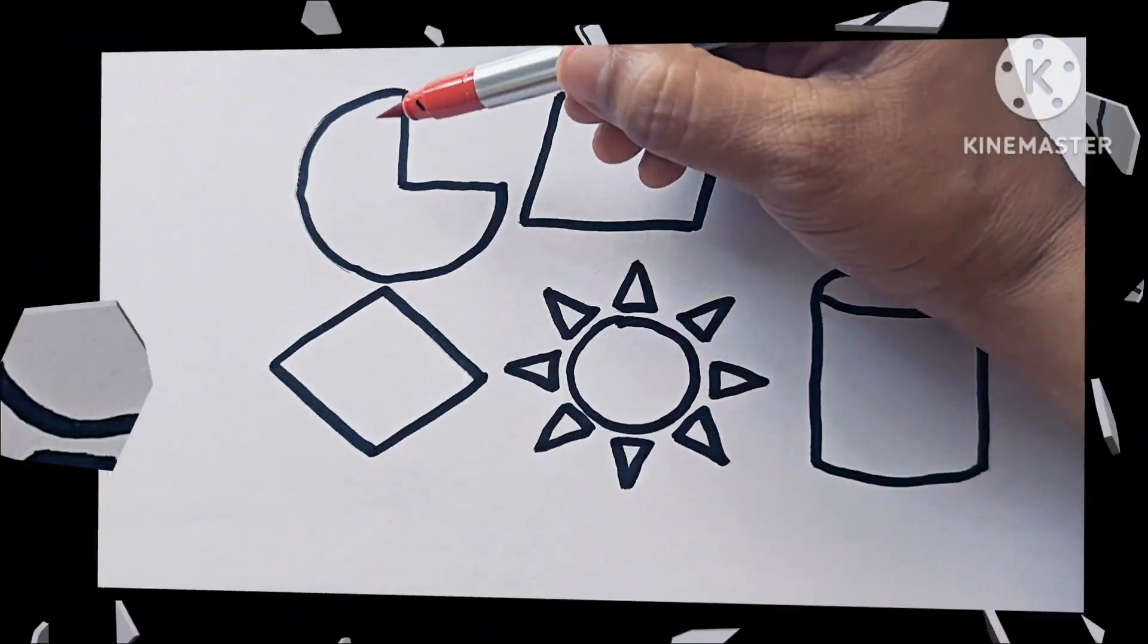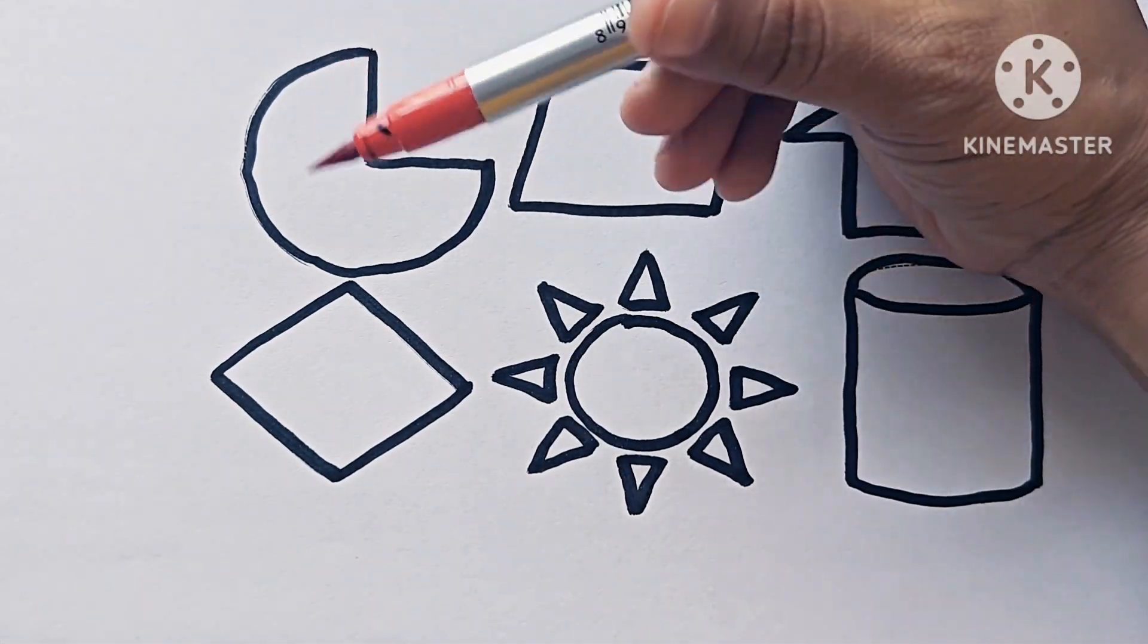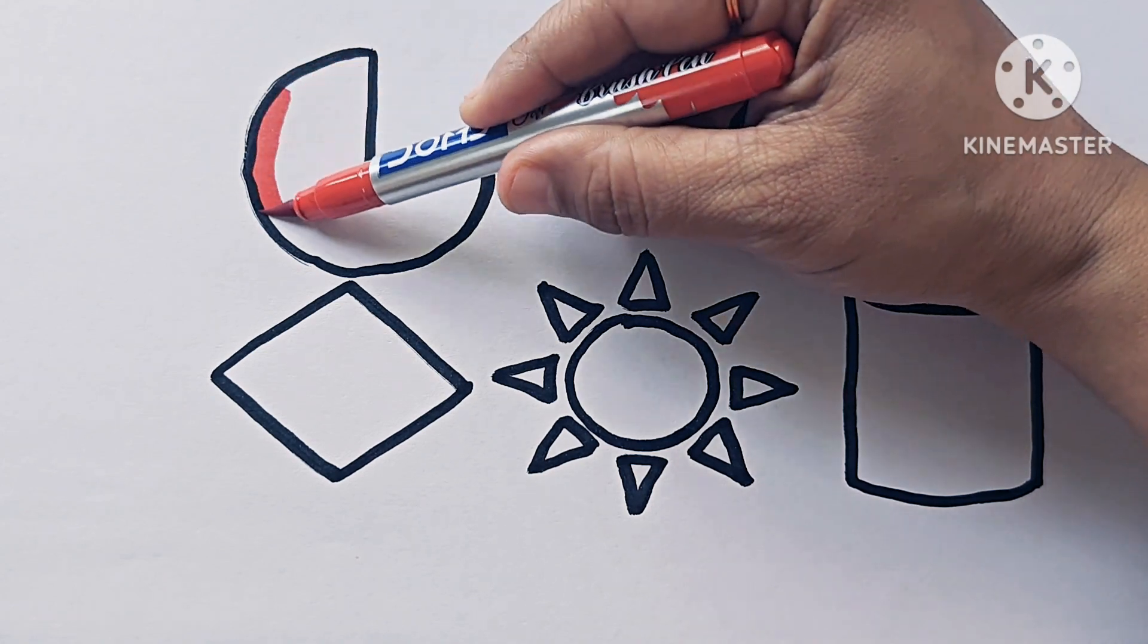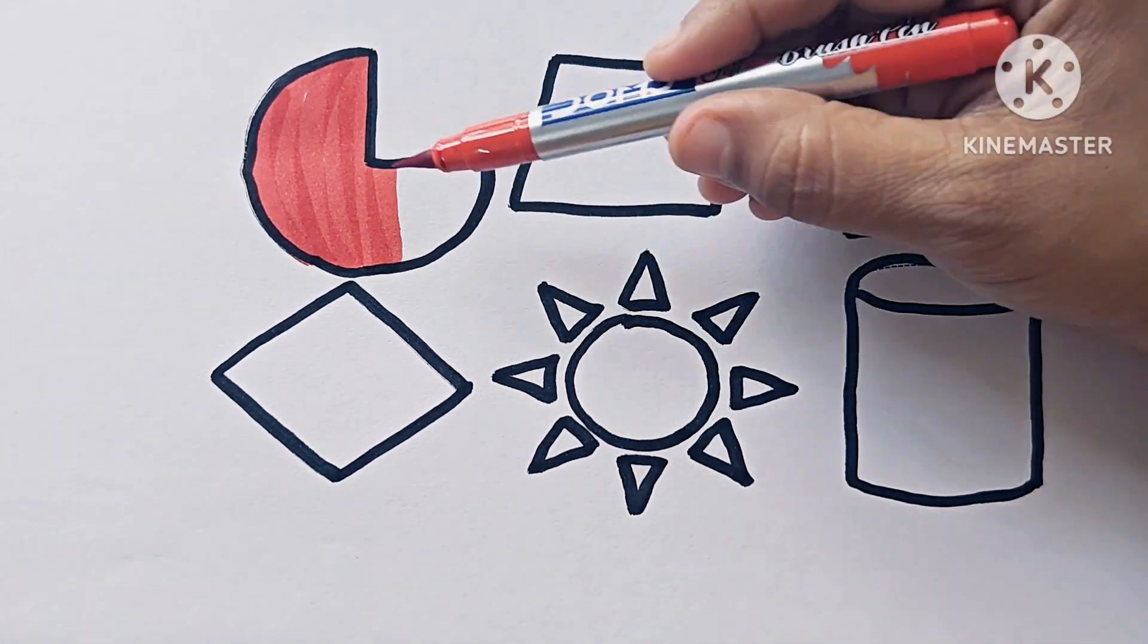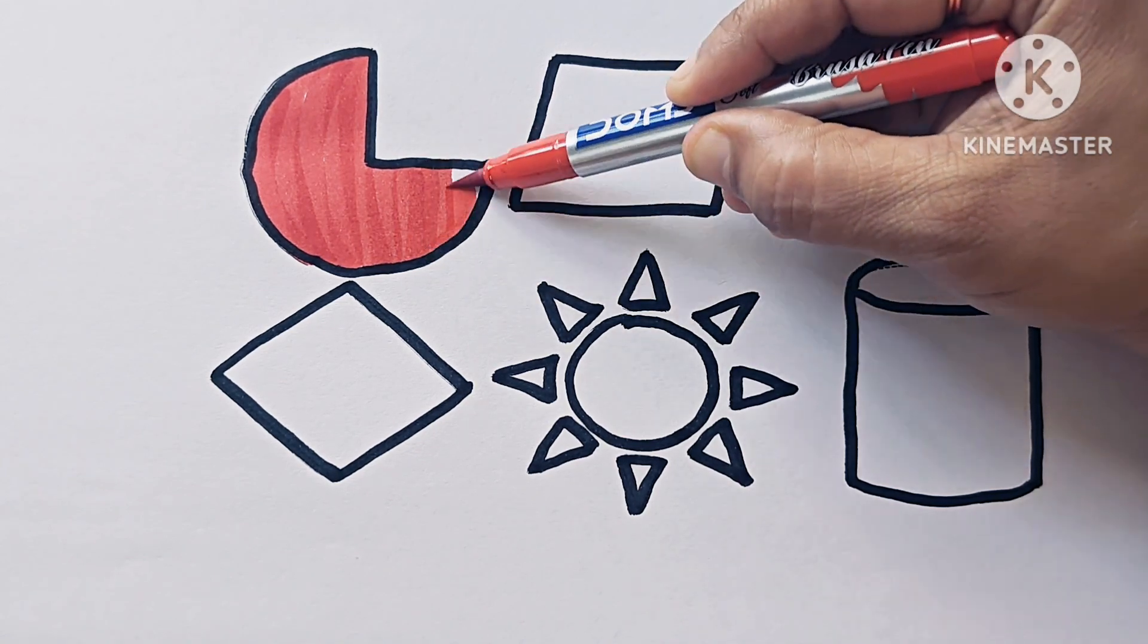Let us fill the colors. This is pie and this color is red color. Color is red and shape is pie.